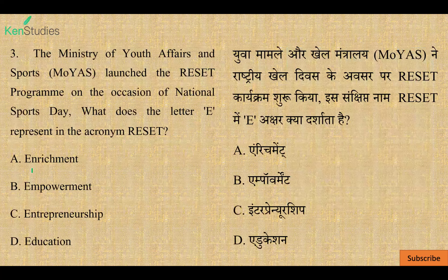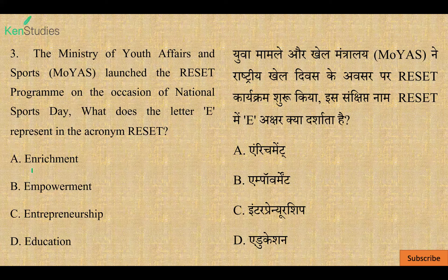Next question: The Ministry of Youth Affairs and Sports launched the RESET program on the occasion of National Sports Day. What does the letter E represent in the acronym RESET? Options are: Empowerment, Entrepreneurship, or Education. The correct option is B — Empowerment.